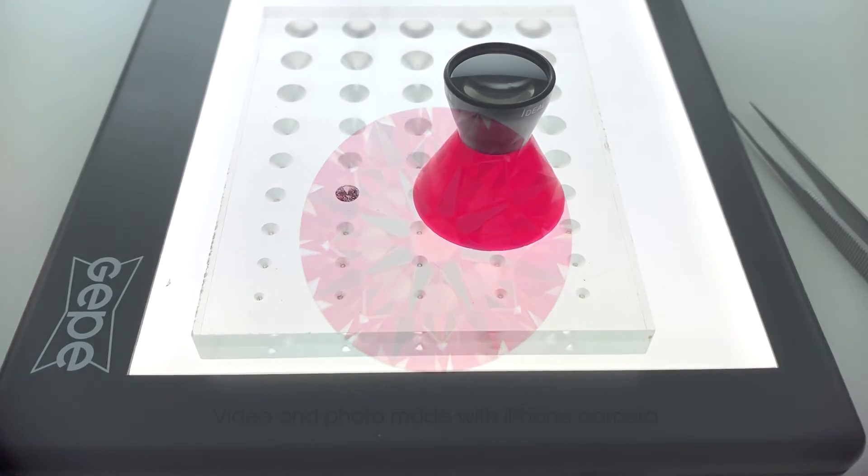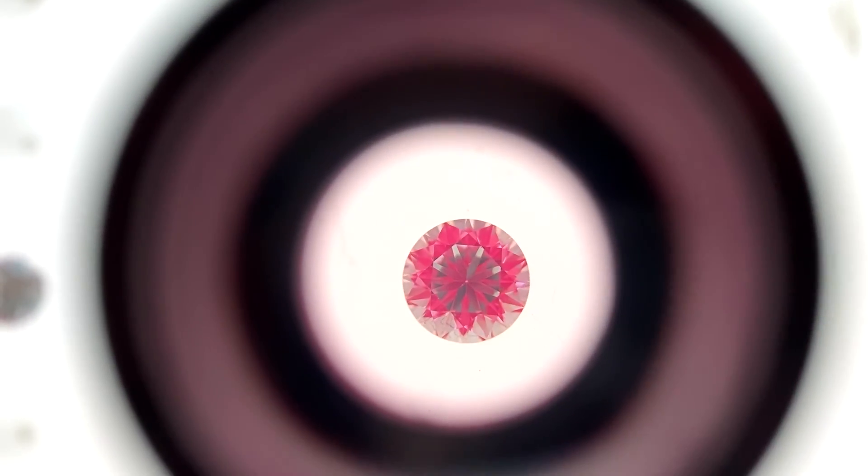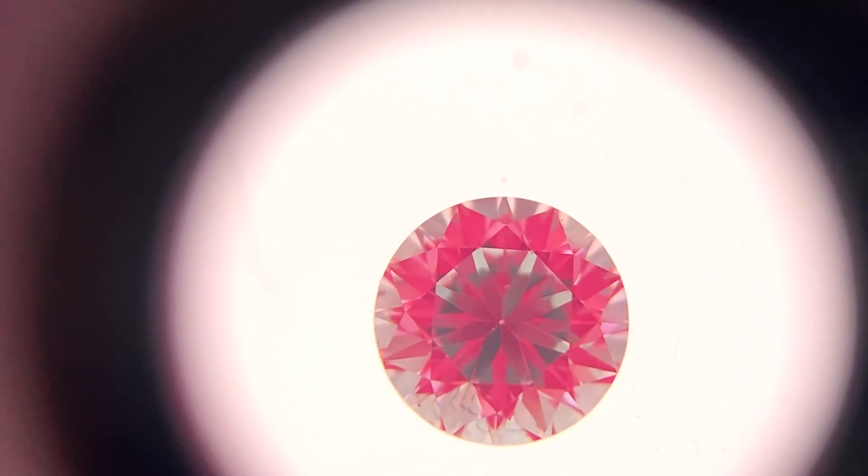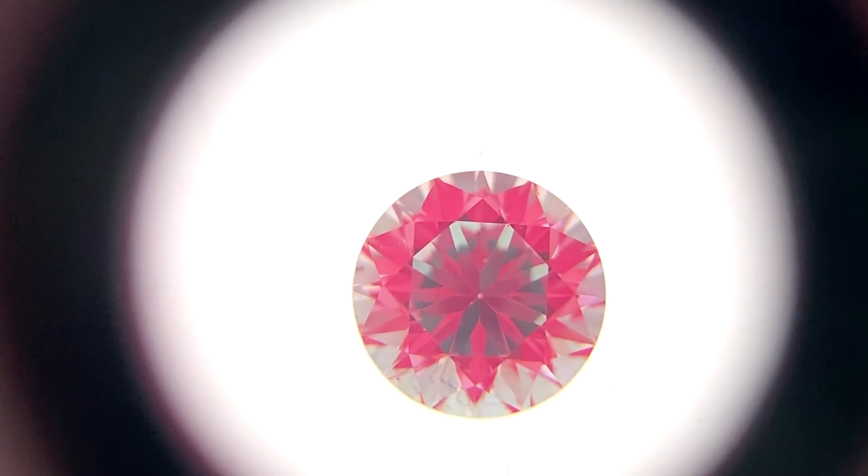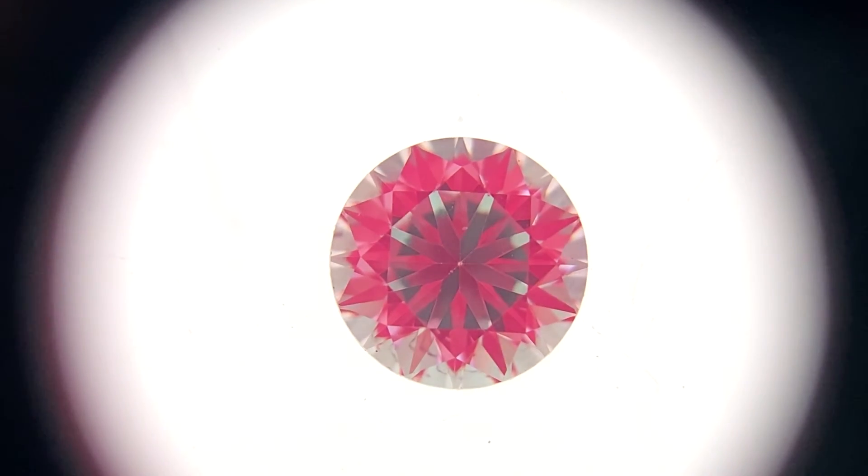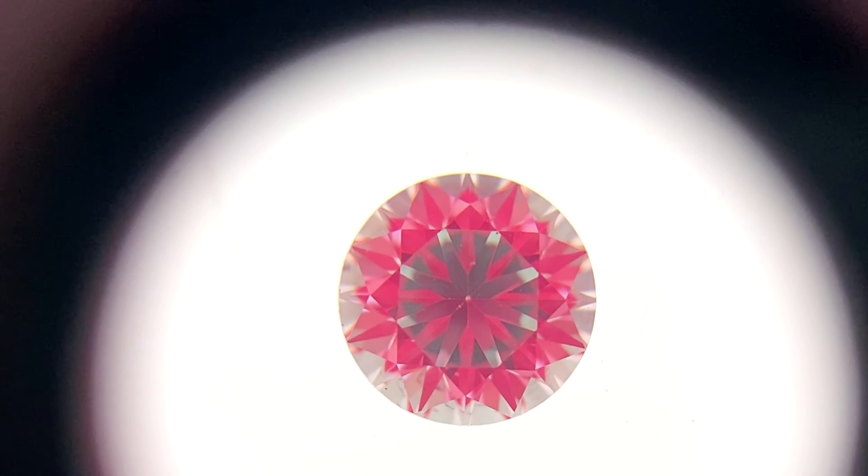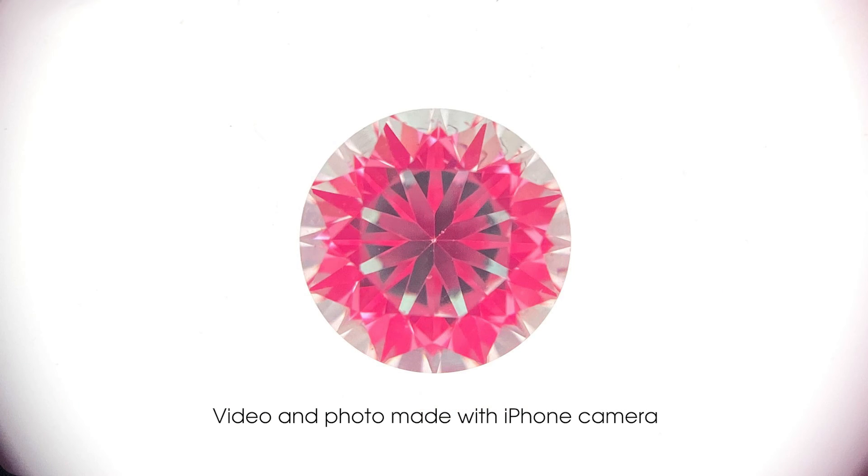Now let's see the 1 carat stone. We can see it has fewer areas of red light return. There are rings of white leakage near the center and around the edges. The black contrast pattern is unbalanced and pooled at the center. This is not a well-cut stone.